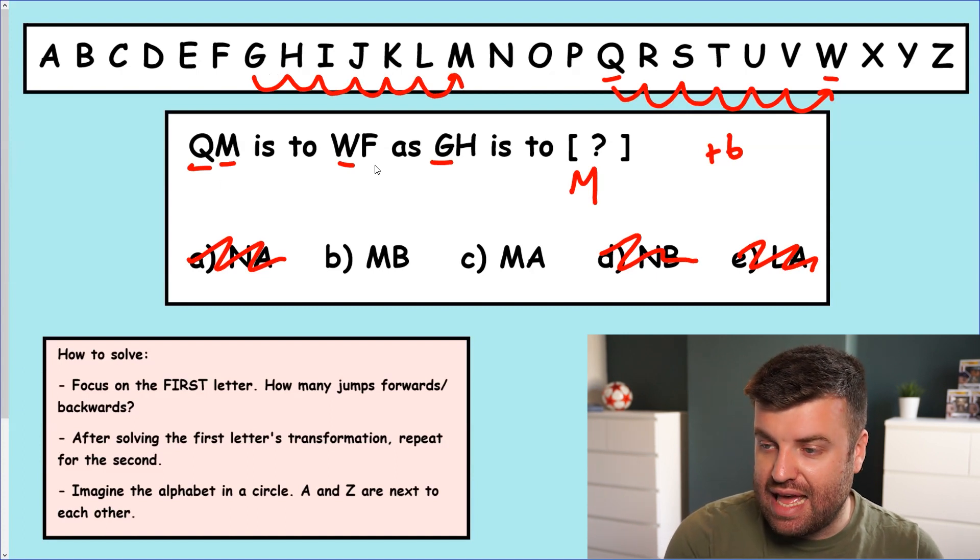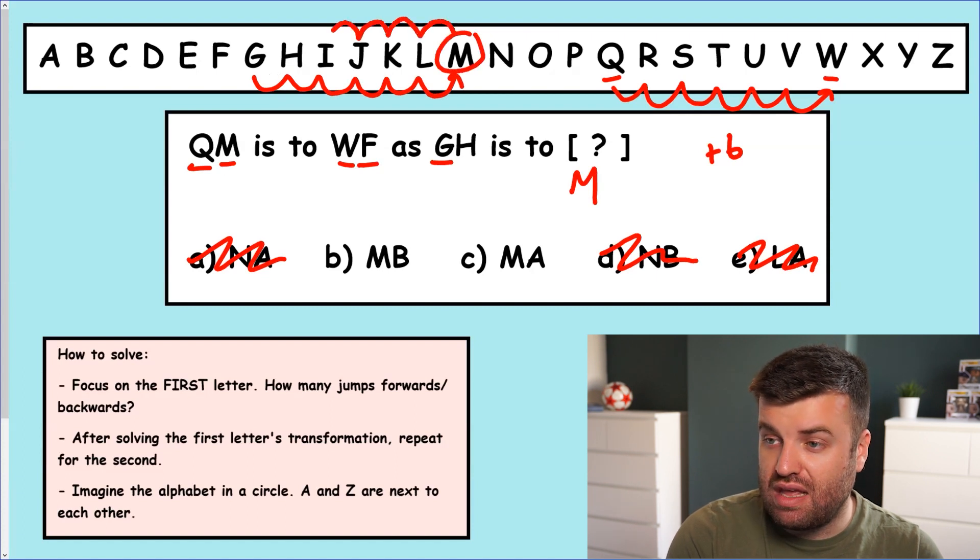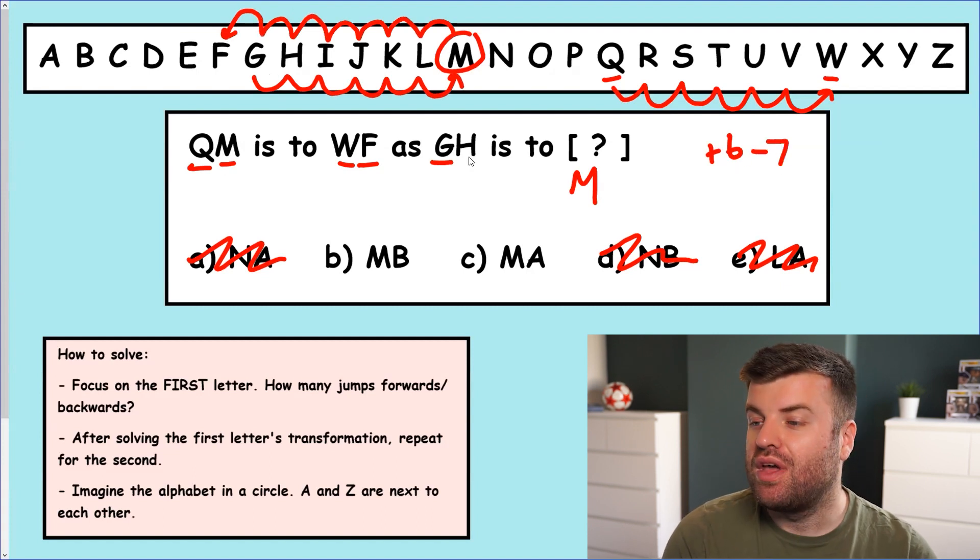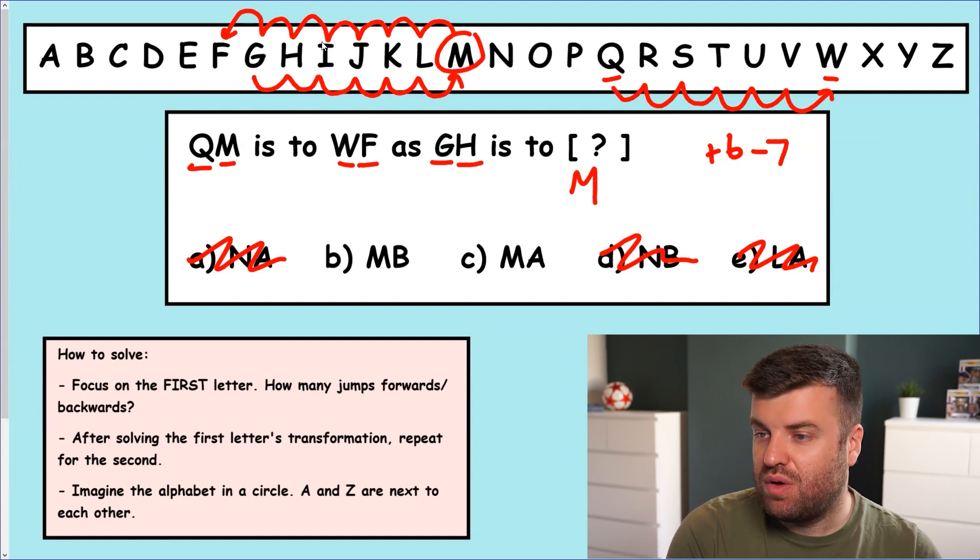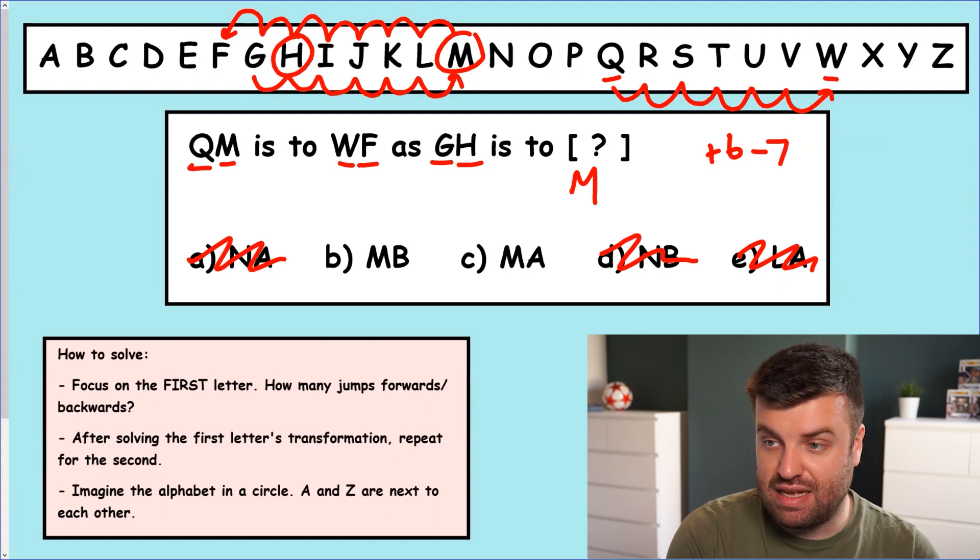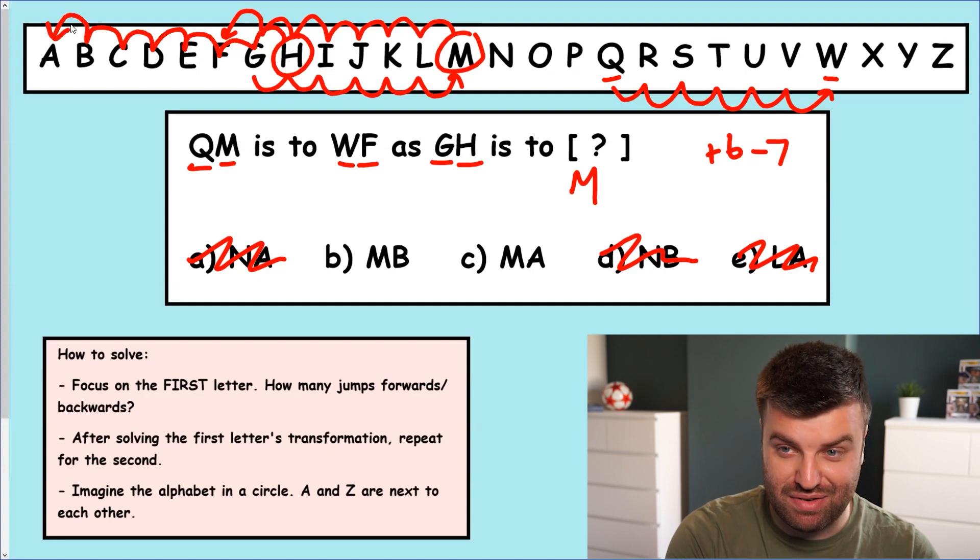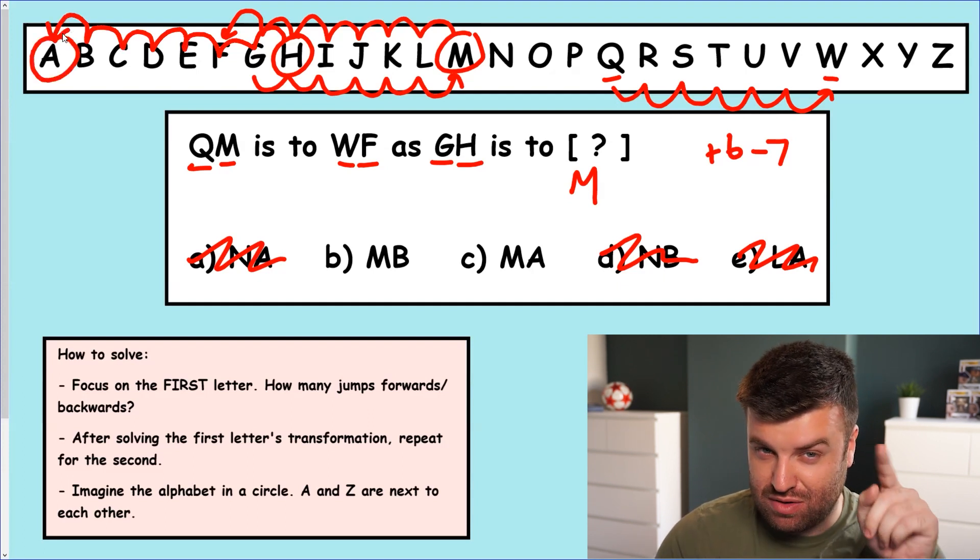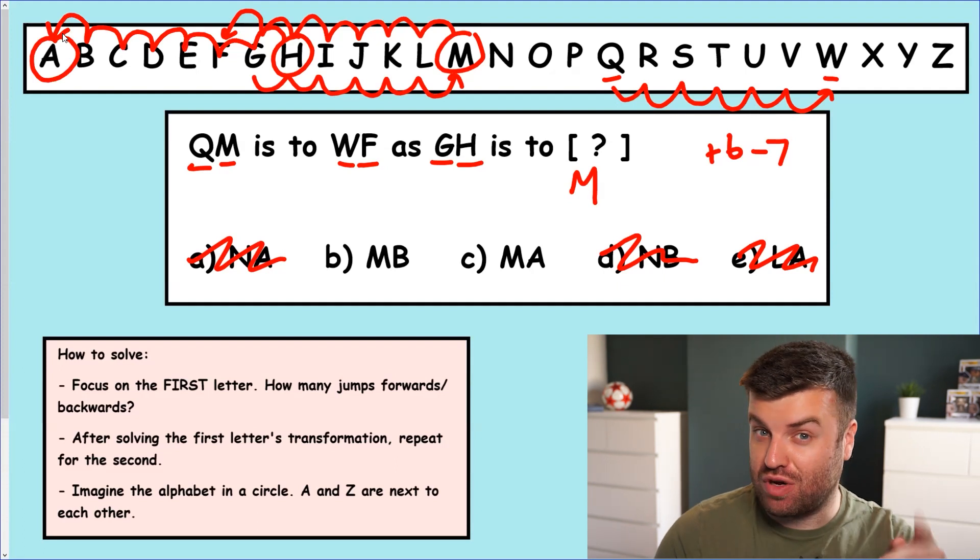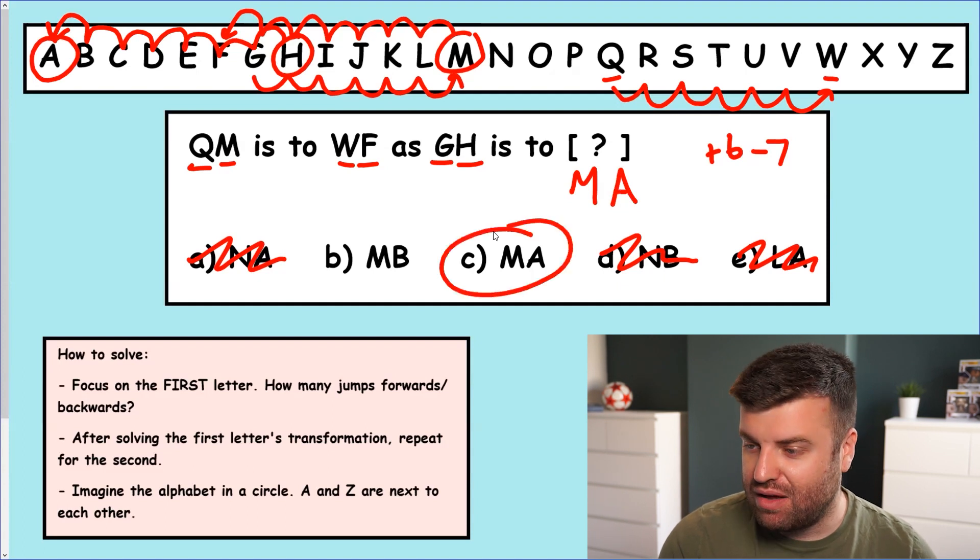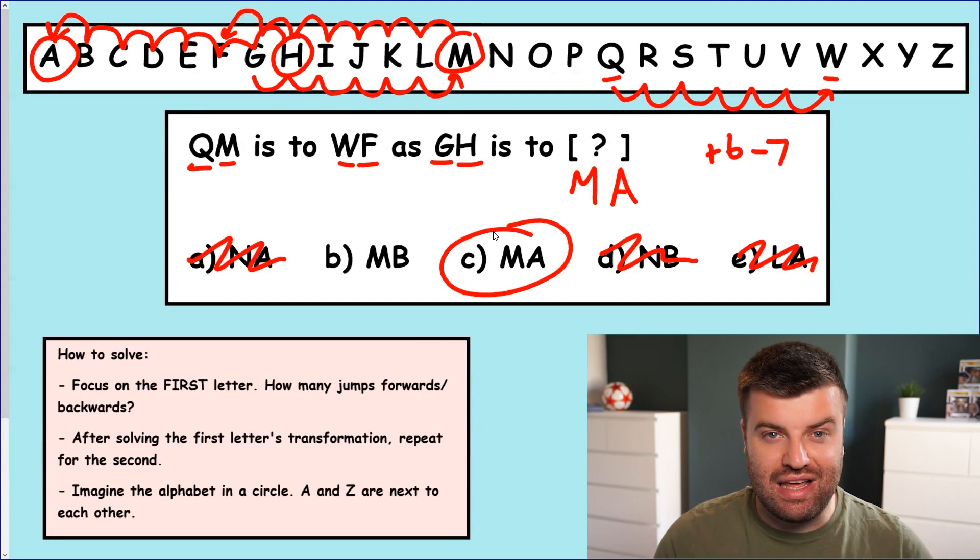And now the second letter is M to F. So we're going to find M and we're going to jump to F. One, two, three, four, five, six, seven. Wow. Minus seven for the second letter. So our second letter here is H. We're going to go to H and we're going to go to minus seven. One, two, three, four, five, six. Oh, just seven. A. Now it wouldn't have mattered if we had to carry on counting. I'm going to show you that in the next question. But luckily for us, it stopped there. The answer is A. And look how quickly we've solved that one. Find the jump. Isolate each letter. Solve for the answer.